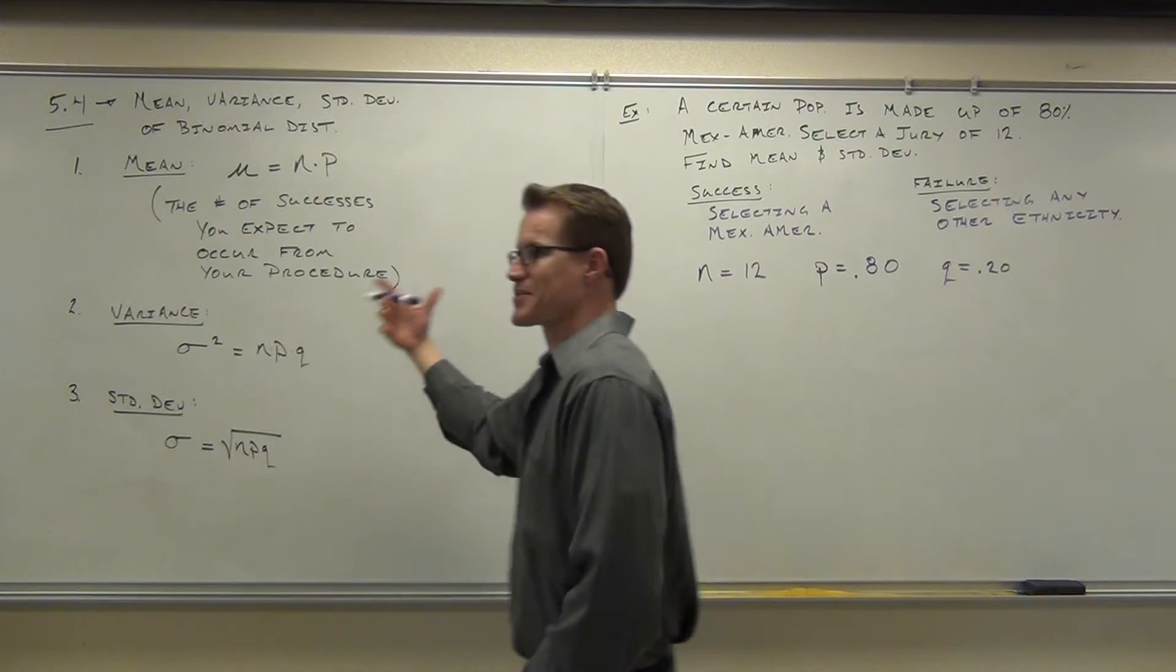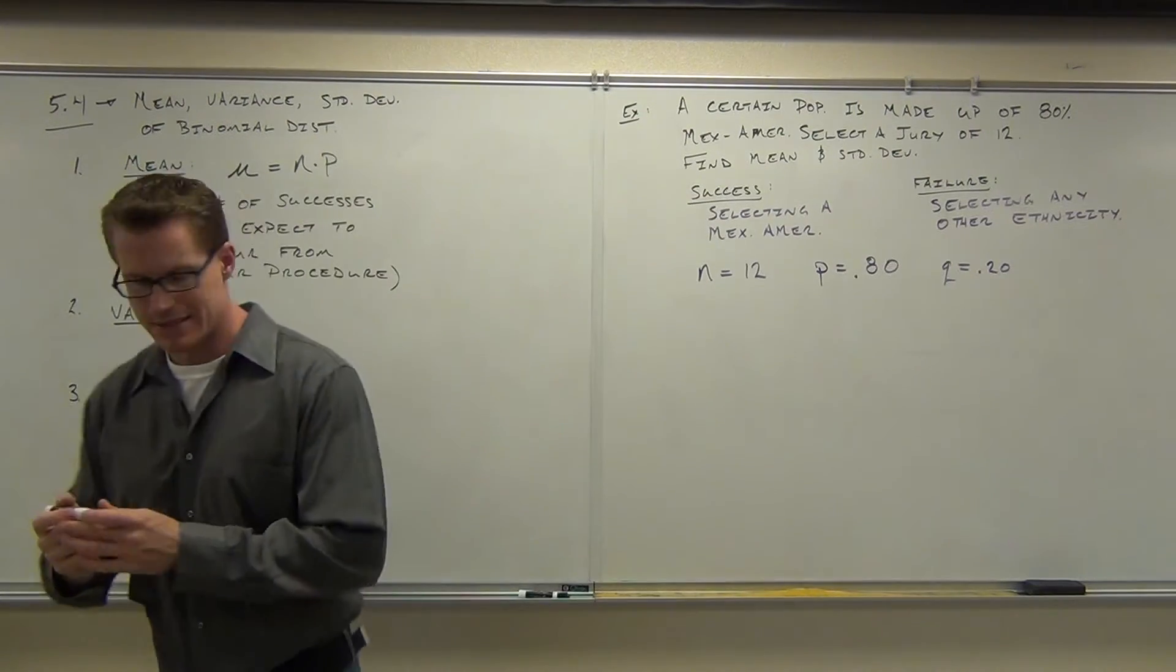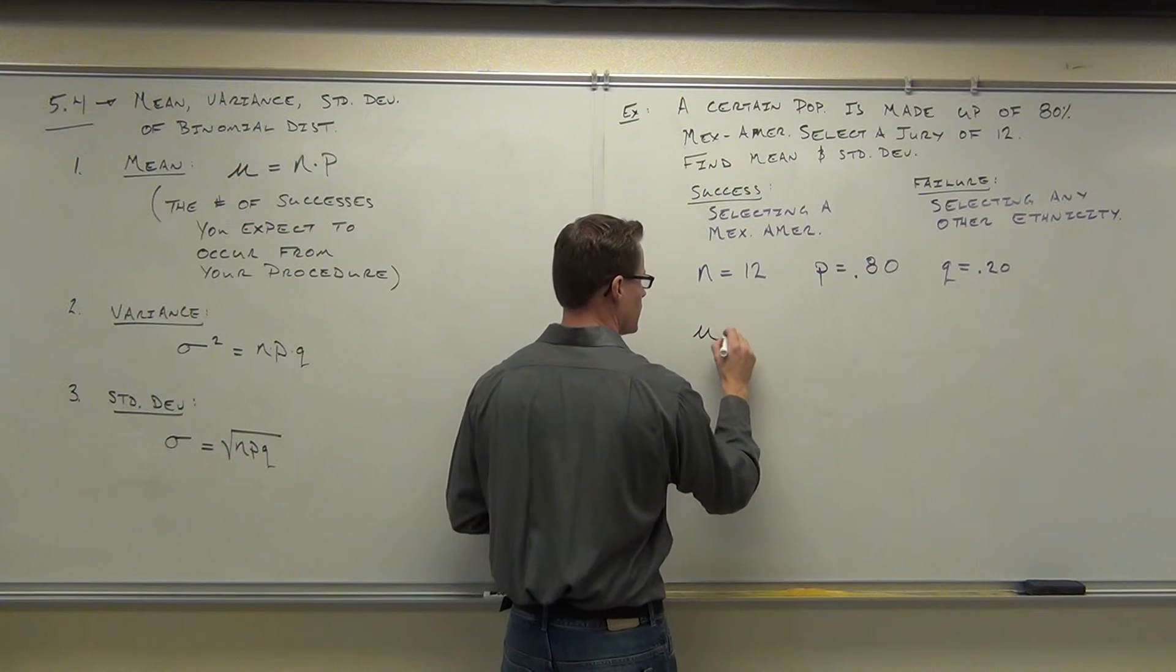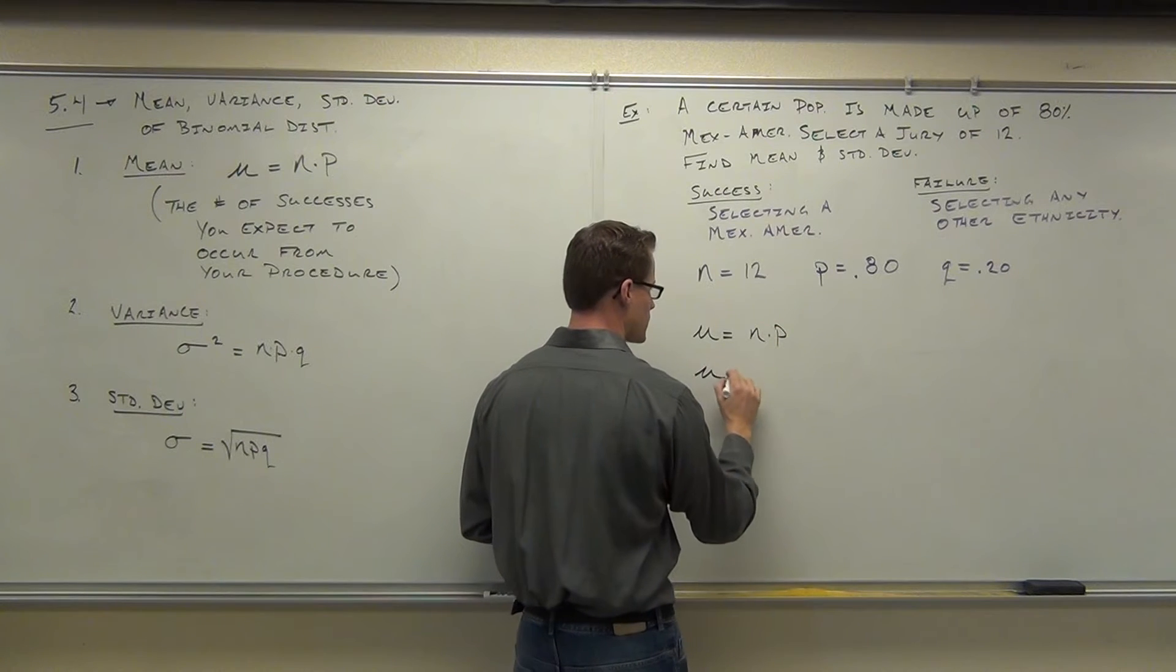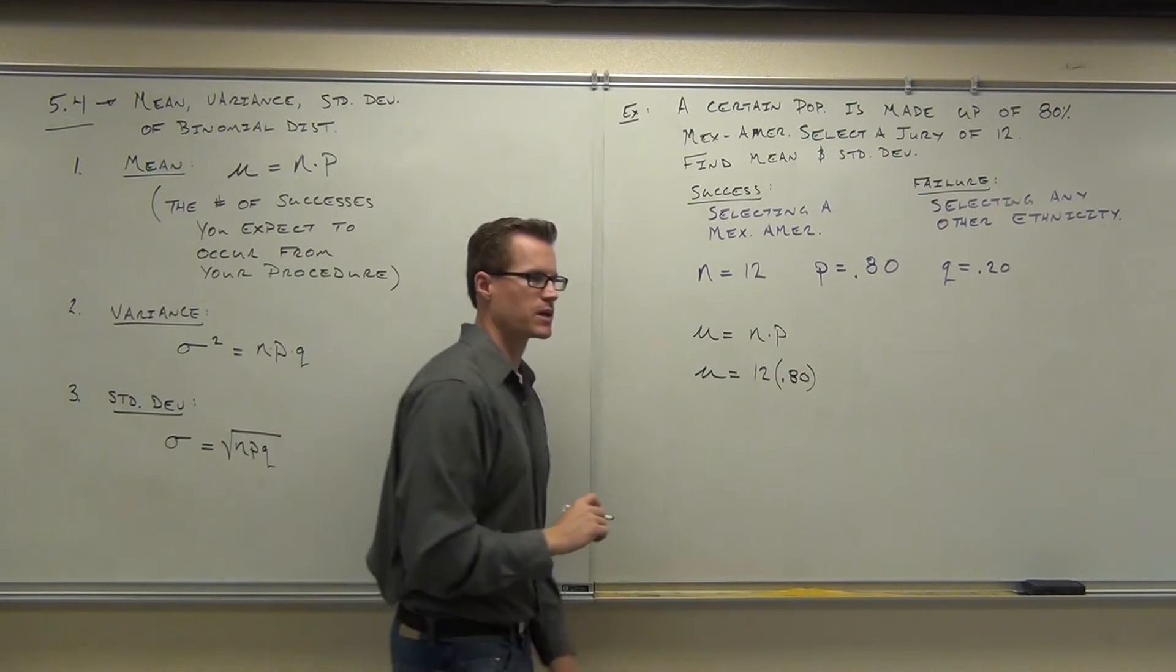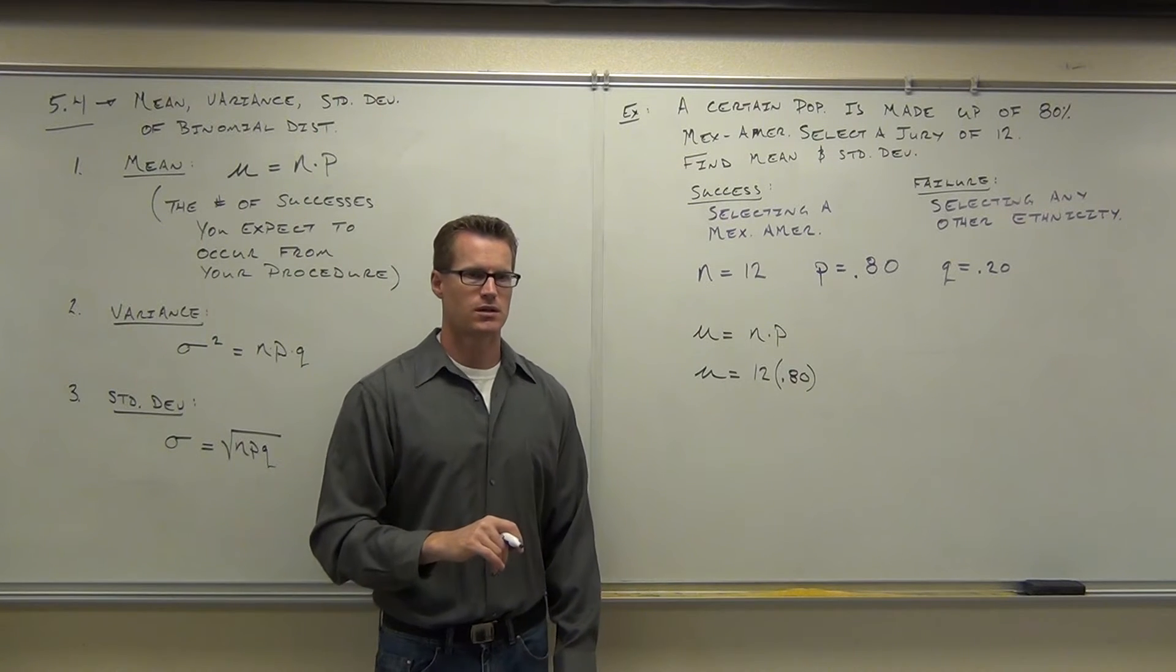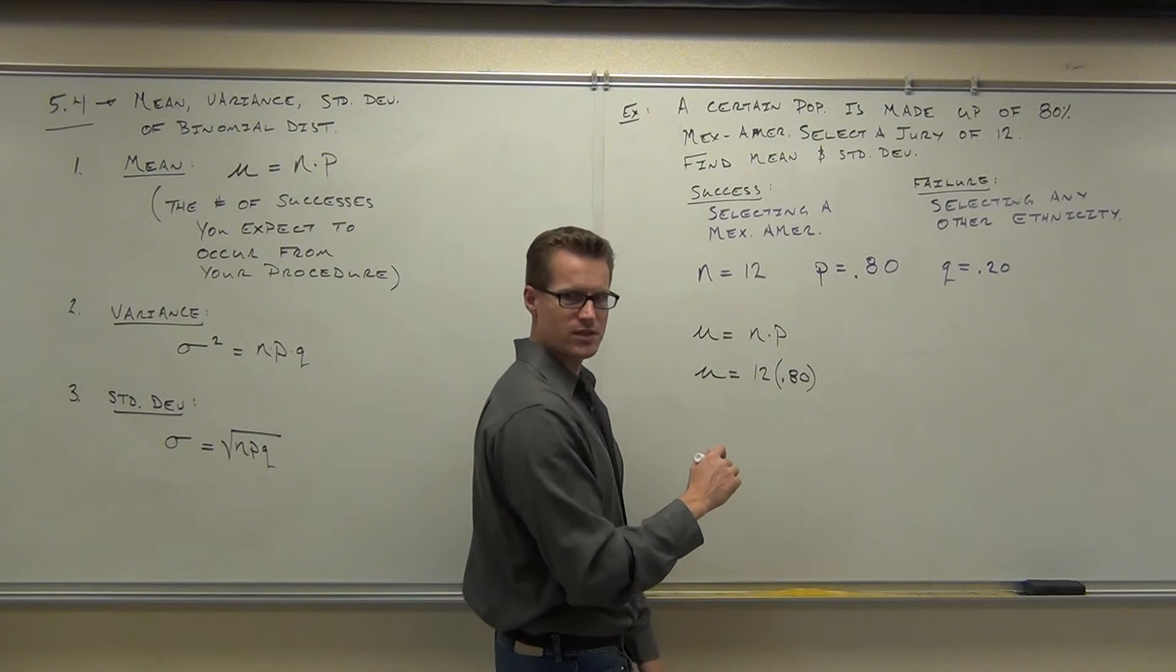We have enough information, because we only need these three items, to find our mean and our standard deviation. So, let's do that together. In order to find the mean, mean says you're going to take N times P. So, in our case, our N was 12. Our P was .80. And you're going to tell me that that is how much? 9.6. 9.6 Mexican-Americans.